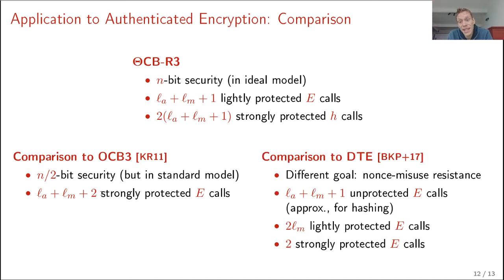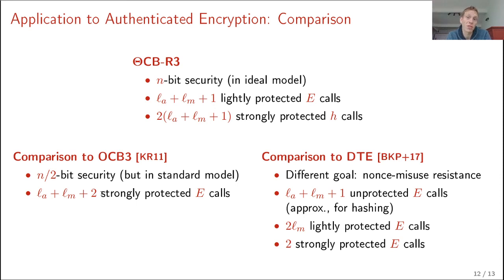Comparing to DTE (Digest, Tag and Crypt by Berthi et al.): it's hard to compare directly because they have a different goal — they target non-misuse resistance, which leads to a different type of scheme. If the hash function of DTE is based on a block cipher, for instance Merkle-Damgård based on a block cipher, then you get a normal amount of unprotected calls, lightly protected calls, and strongly protected calls. Notably, DTE is sequential whereas ThetaCB-R3 is parallel.